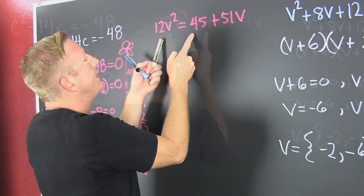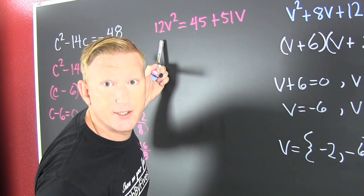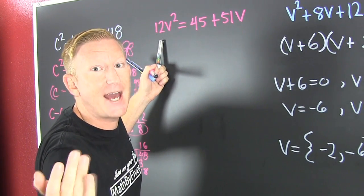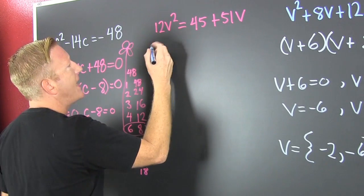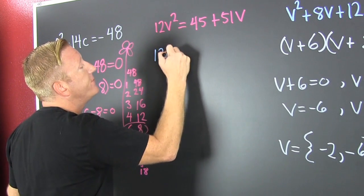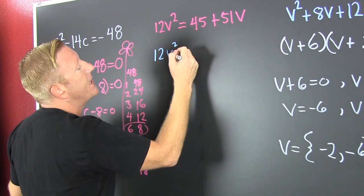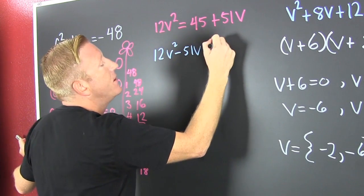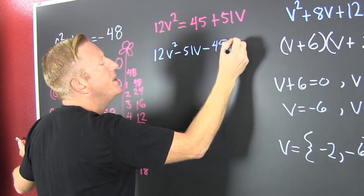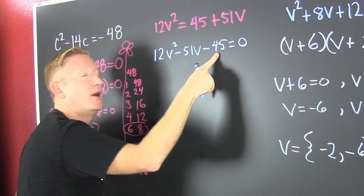Let's go and get another one. So we first need to set it equal to 0. Wait, wait, back that math up. So that's 12v squared, I change the sign on that guy, that's a minus 51v and minus 45, and then that's equal to 0. Step 1 complete, set it equal to 0.